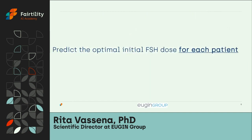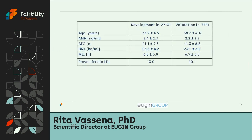We wanted to predict the optimal initial FSH dose for each patient — for everyone, regardless of age or type of cycle. To do so, we prepared a large dataset: approximately 3,000 cases used for algorithm development and about 800 additional cases used after training for validation of algorithm performance. When comparing the algorithm to clinicians, we refer to a pool of approximately 35 doctors with an average of 12 years of experience in assisted reproduction, with a wide range of expertise.